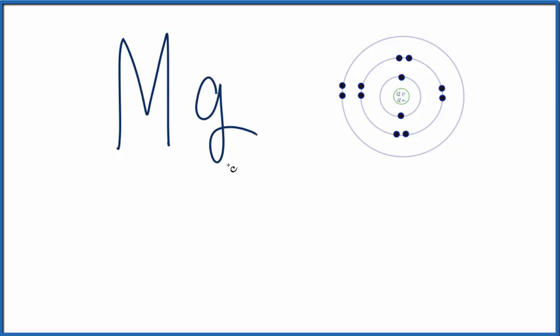So for Mg, we're in group 2, which means we have 2 valence electrons in the highest energy level, kind of like the outer shell. We have the highest energy level here, and there's our 2 valence electrons.